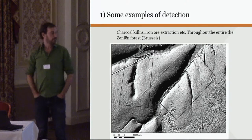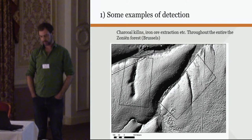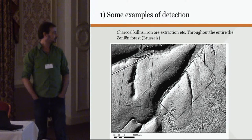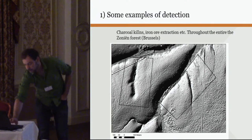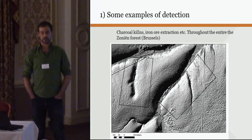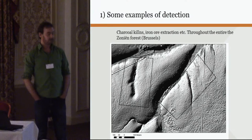A very spectacular example from the Zolien forest near Brussels, which is believed to be one of the most pristine forests of Belgium and Flanders. But what we can see is a very intensively exploited landscape from the 18th century — a large number of charcoal kilns. You can see all those little dots; those are all charcoal kilns. And an entire area where they extracted iron ore. We estimated the number of charcoal kilns dotted throughout the entire Zolien forest to be more than 2,000 of those heaps.